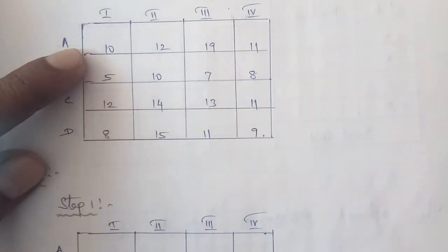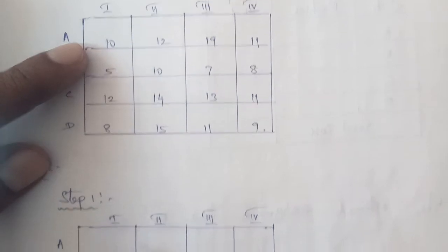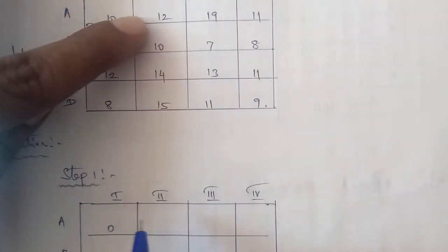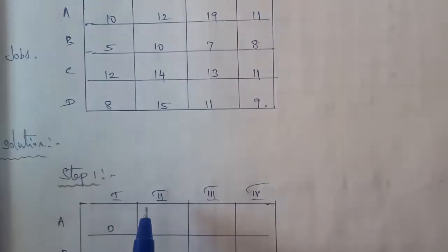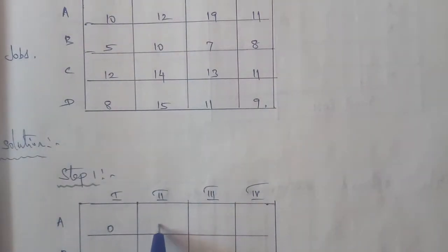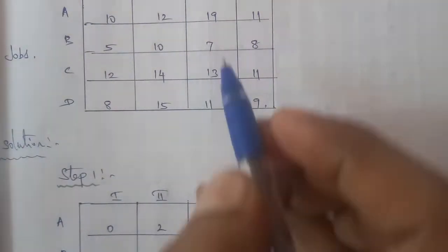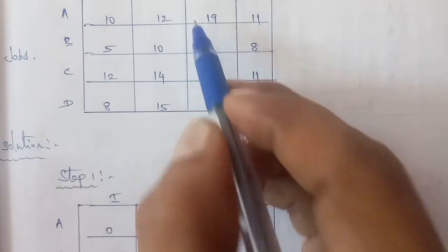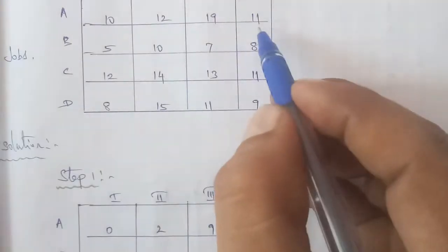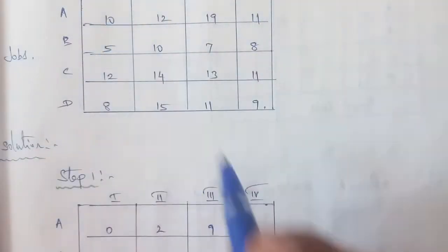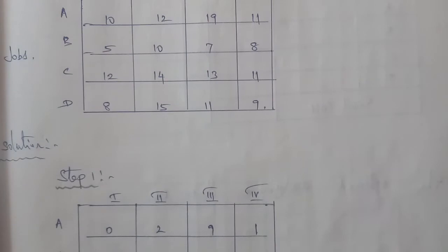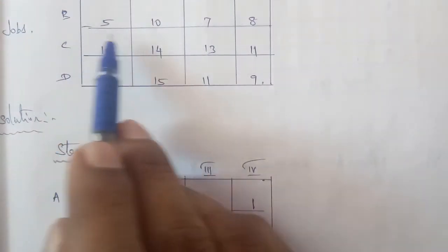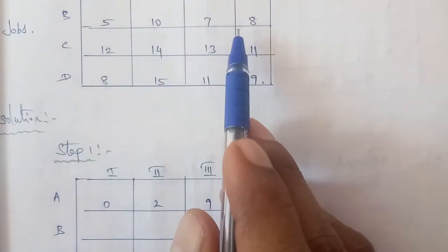So: 10 minus 10 equals 0; 12 minus 10 equals 2; 19 minus 10 equals 9; 11 minus 10 equals 1. These are the updated values for the first row.